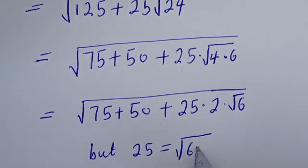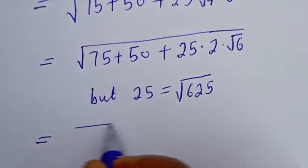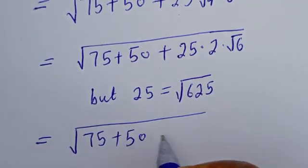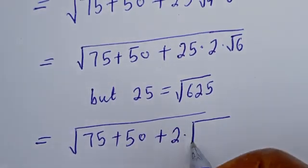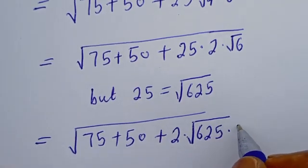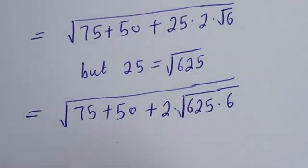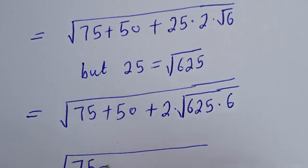Note that 25 is equal to square root of 625. So the whole expression can be written as square root of 75 plus 50 plus 2 multiplied by square root of 625 multiplied by 6.